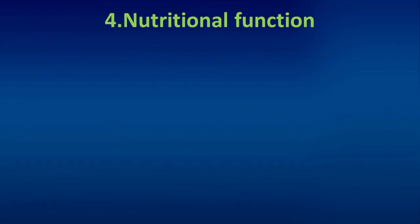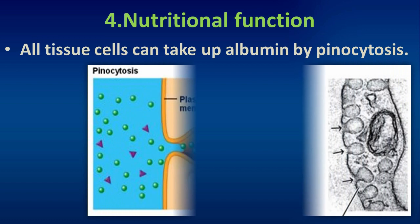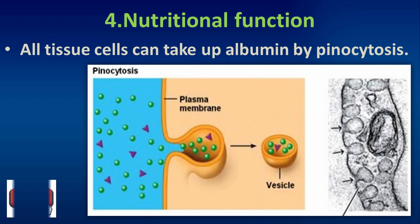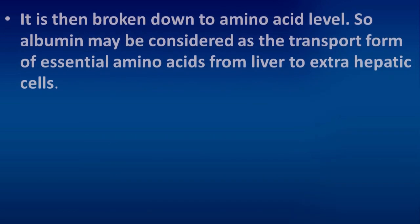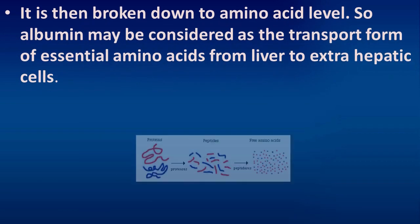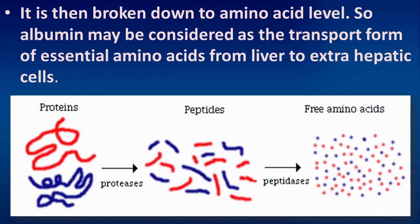Albumin also has a nutritional function. All tissue cells can take up albumin by pinocytosis, after which it is broken down to the amino acid level. Therefore, albumin may be considered the transport form of essential amino acids from the liver to extra-hepatic cells.